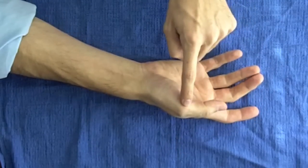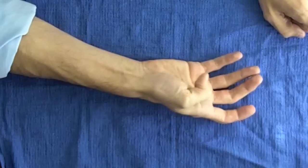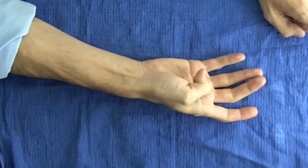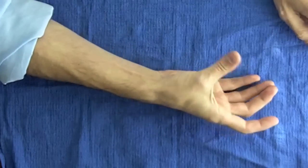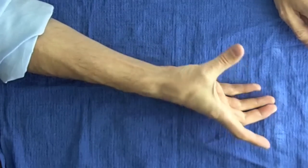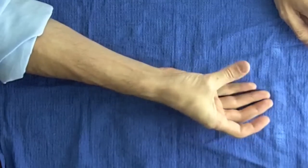The thumb has two joints at the end and middle which flex and extend just like the fingers. The next joint down, however, is highly specialized and allows several unique movements not possible in the fingers.